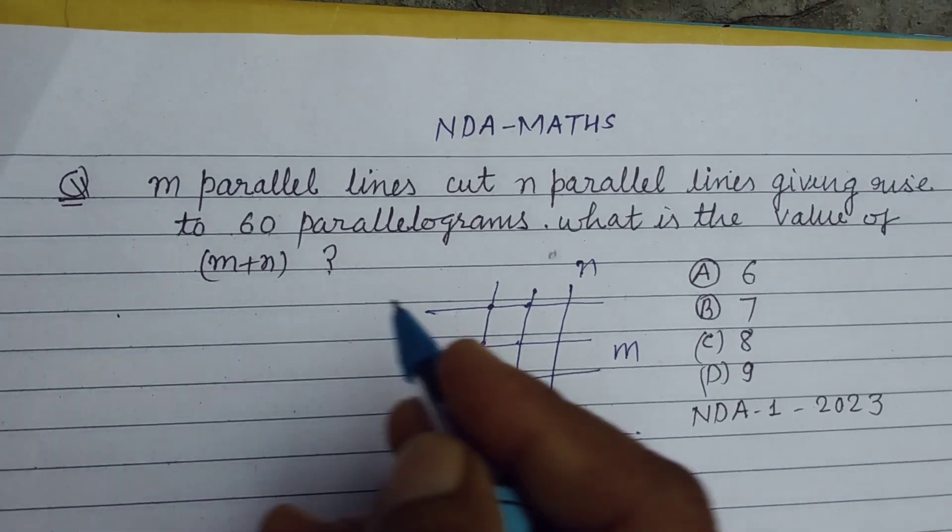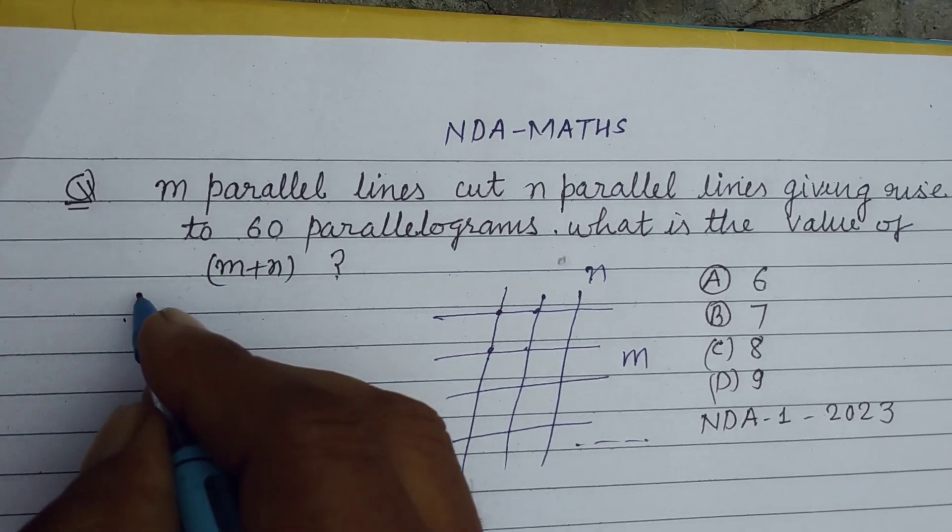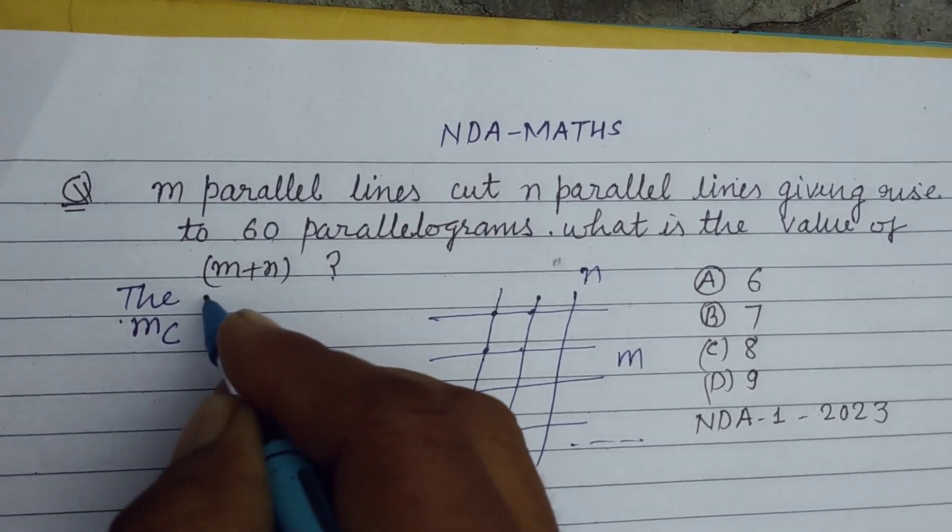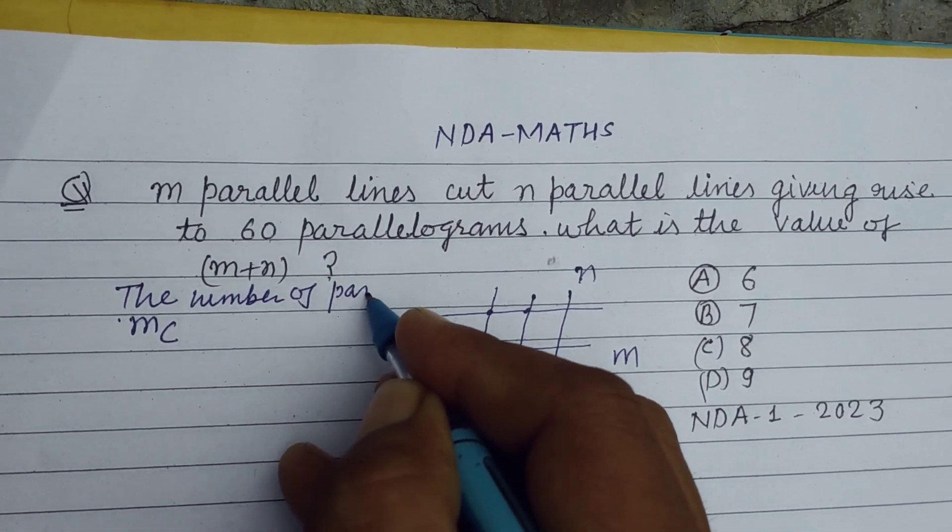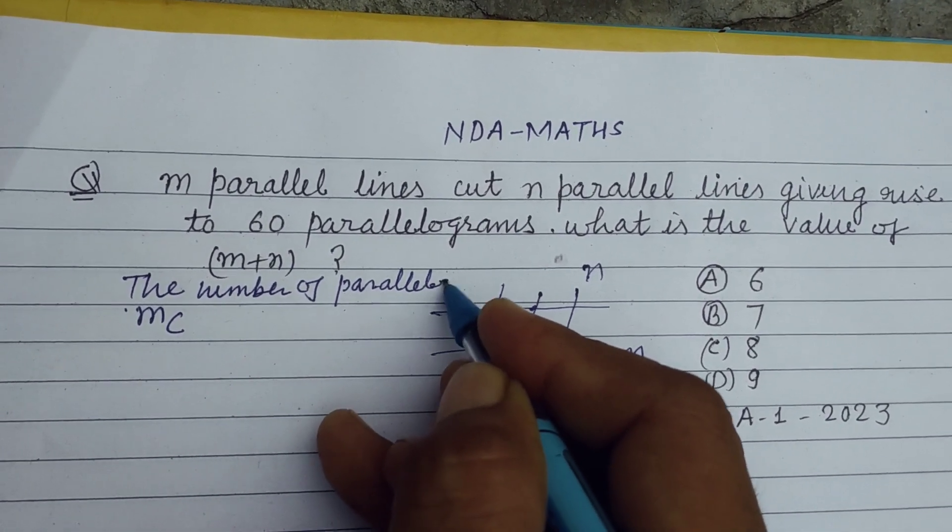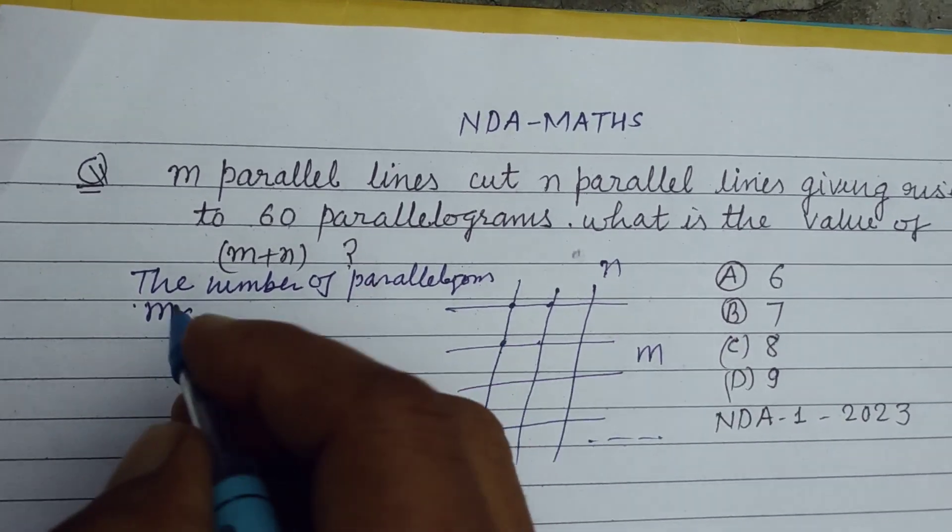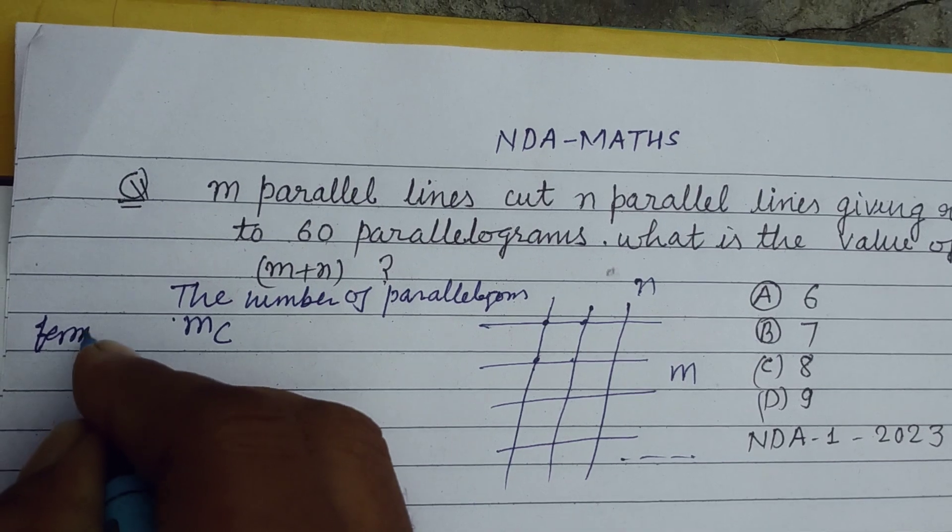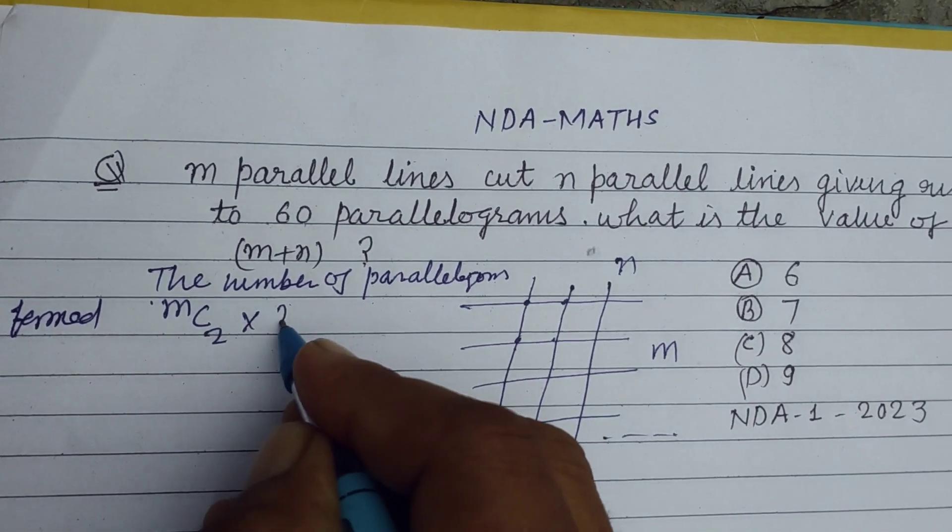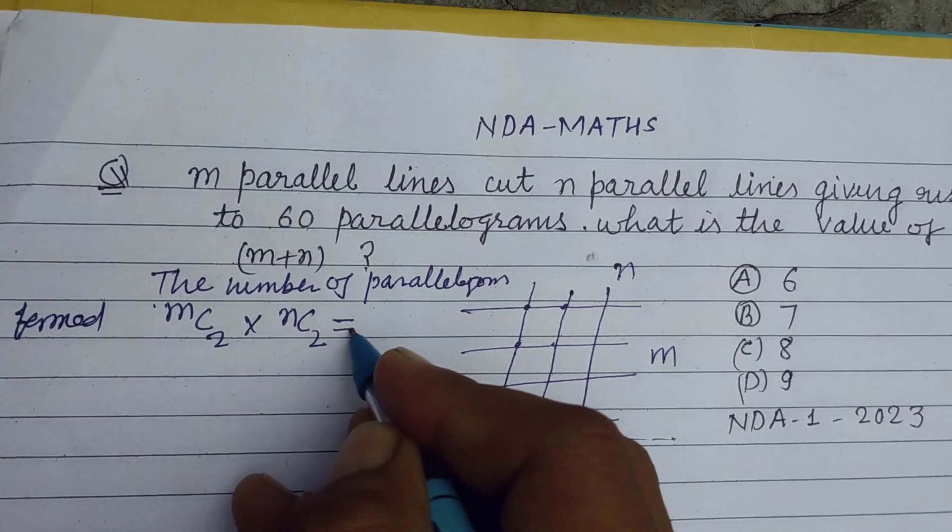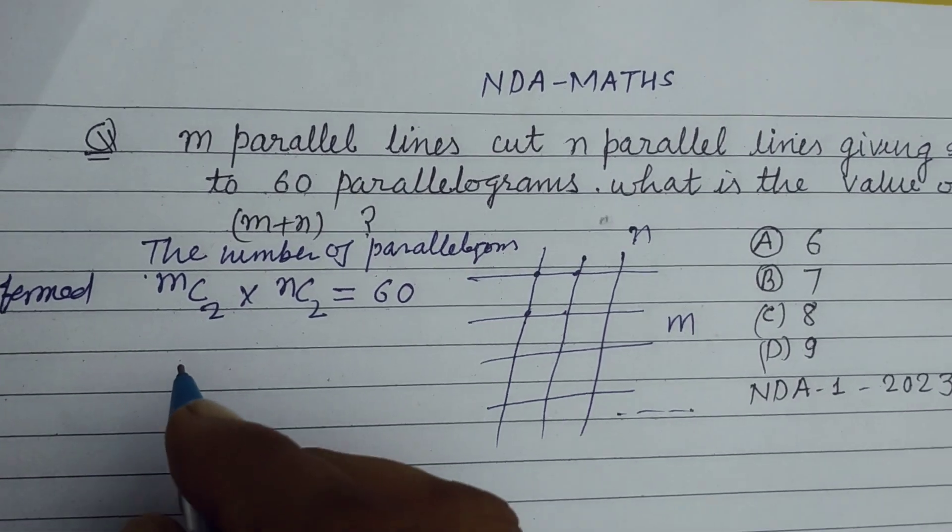So the number of parallelograms formed equals mC2 times nC2, equal to 60.